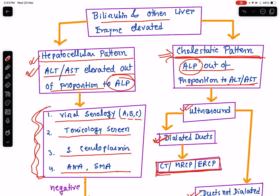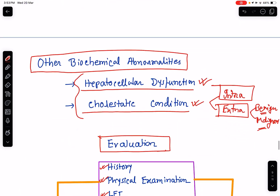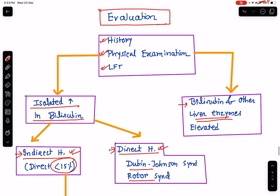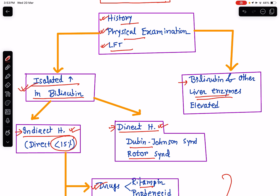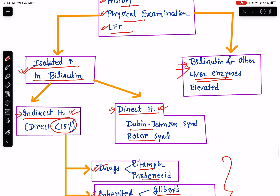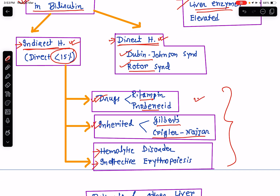Let's revise it in a nutshell. Take a good history, physical examination, and do a liver function test. Divide cases into two varieties: where there is isolated rise in bilirubin, and where there is rise of liver enzymes along with the bilirubin. Isolated rise in bilirubin can be indirect or direct hyperbilirubinemia. Causes of direct hyperbilirubinemia: Dubin-Johnson and Rotor syndrome. Indirect hyperbilirubinemia causes: drugs, inherited conditions, and hemolytic disorders.